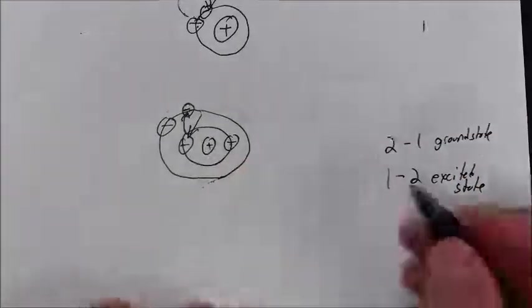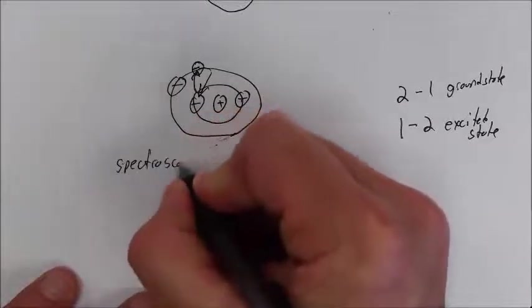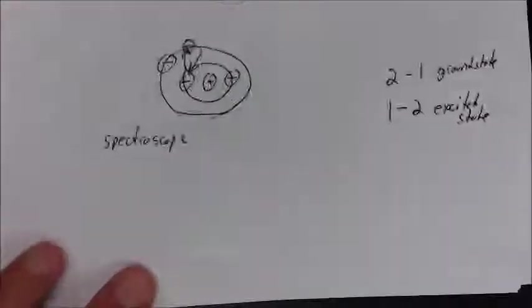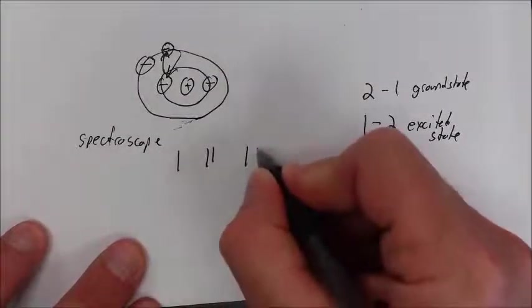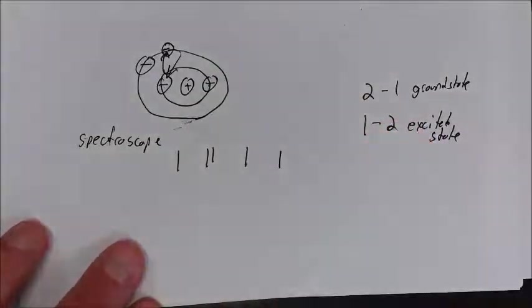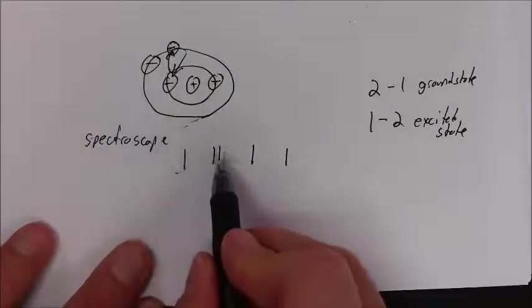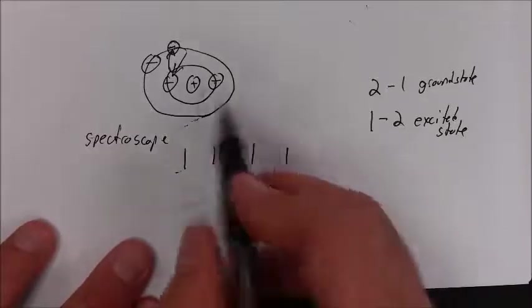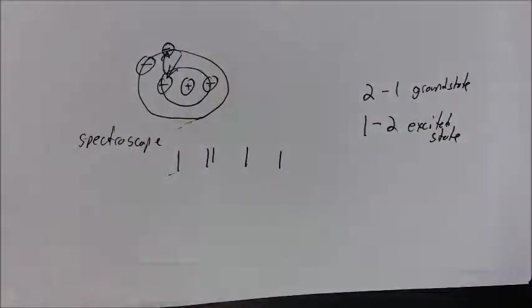Now you can look at this through a spectroscope, and you'll get a bright line spectrum. It's kind of like a fingerprint to tell you what element you're looking at. The bright line spectrum is the wavelengths of energy that's released when the electrons fall back to their ground state.